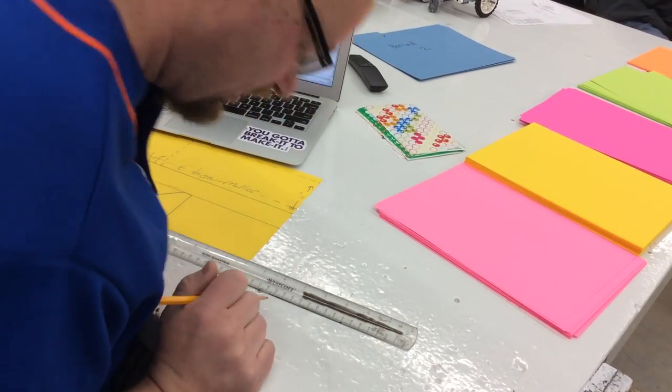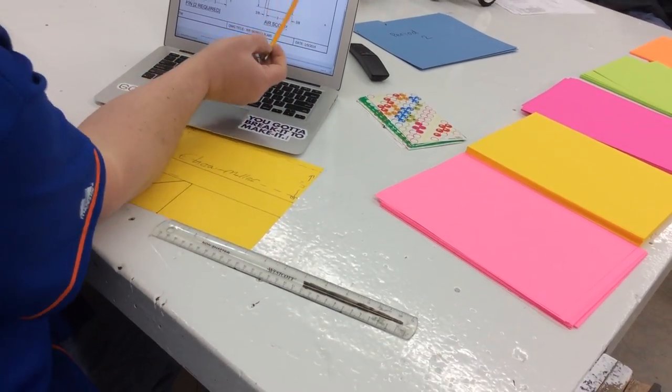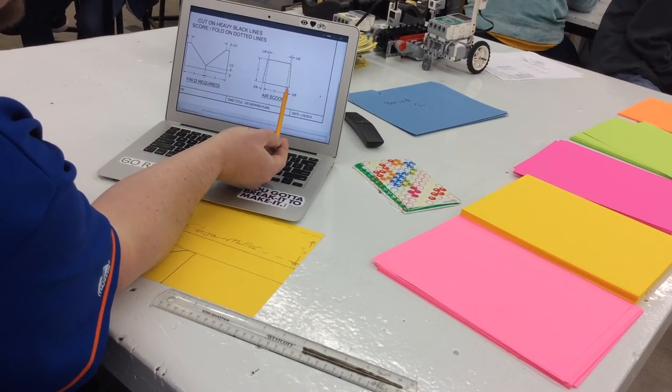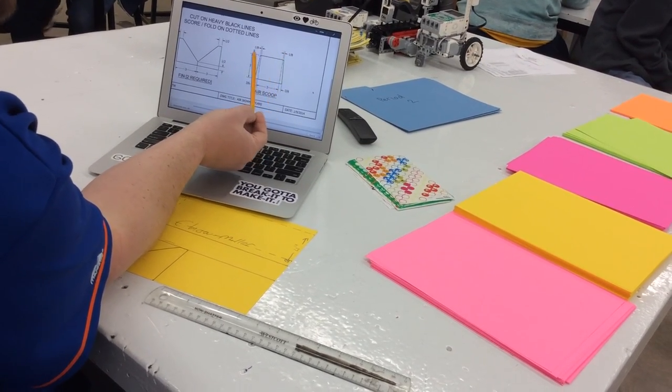Creepy enough for you? Last part right here. So the air scoop is really difficult because it's got this 3 eighths of an inch and 1 eighth of an inch up here.